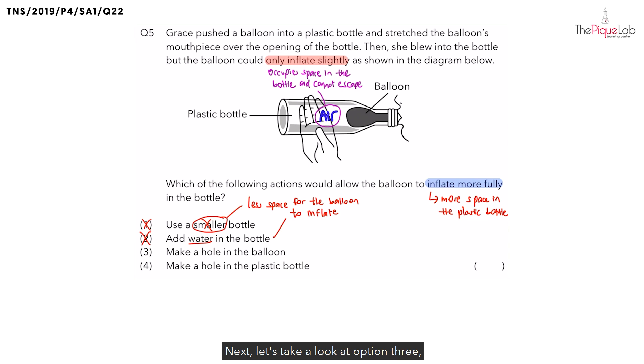Next, let's take a look at option three. They said to make a hole in the balloon. Now I know what some of you are thinking. The moment you see the word make a hole, you will think, yes, the air can escape from the bottle, which means there is more space. So option three is your answer. But look carefully. Where did they make the hole in? It is actually inside the balloon. Now think about it. When there's a hole in the balloon, can the balloon even inflate in the first place? No. So let's write this down. The balloon cannot inflate. So option three, definitely wrong.